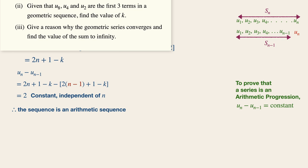Now moving on to part 2, we are given that u8, u4, and u2 are the first three terms in a geometric sequence. Now we are required to find the value of k. Now let's try to obtain these terms first.